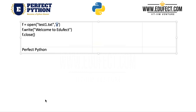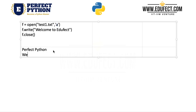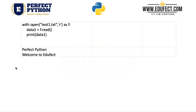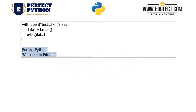Then we have another mode we can open the file in, which is 'a'. 'a' stands for append. Append means I can write to this file but its contents will not be deleted — I will write at the end of the file. When we say f.write('welcome to Edureka'), 'welcome to Edureka' will be written to the end of the file. After closing it, test1.txt now looks like 'perfect python' followed by 'welcome to Edureka'.